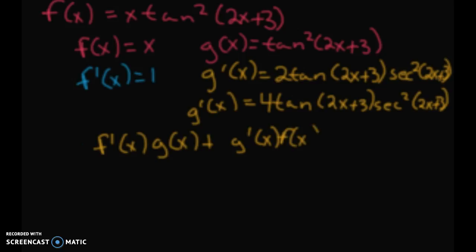So when I do this, I've got to do the derivative of tan²(2x+3), that's this part, and now I got to multiply it by f'(x), which is this, which doesn't make that big of a difference, plus...